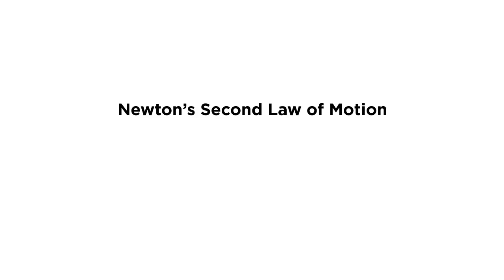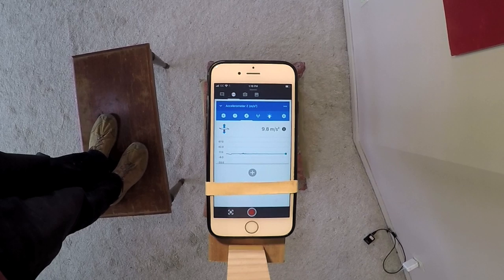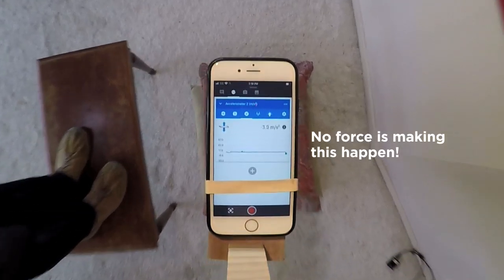Newton's second law of motion says that force equals mass times acceleration. So if the acceleration measurement is zero, then any measurable forces acting on the phone must also be zero. Gravity must not be a force that causes the phone to fall to the floor.